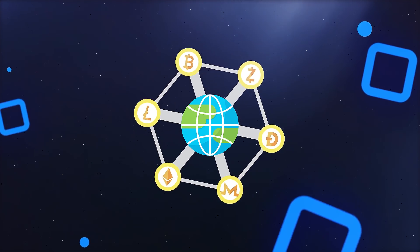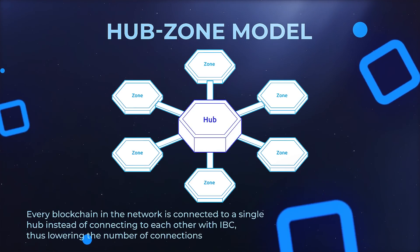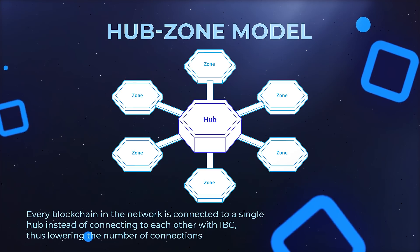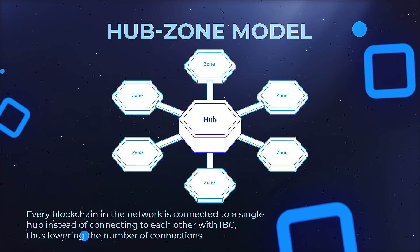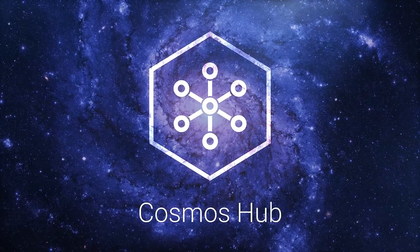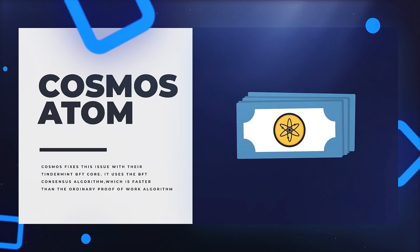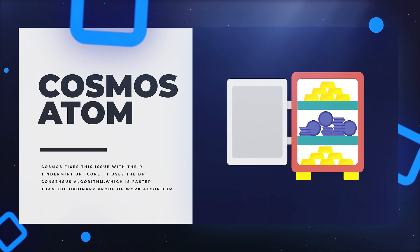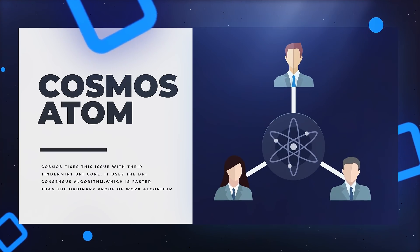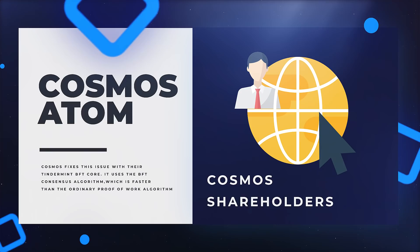Cosmos Network is based on a hub-zone model. Every blockchain in the network is connected to a single hub instead of connecting to each other with IBC, thus lowering the number of connections. A zone is a blockchain that is connected to the central hub, and communication between zones is facilitated by the hub. Cosmos Hub is the world's first blockchain network developed this way. The native token of Cosmos Hub is ATOM, which can be used to pay usage fees and, more crucially, for staking. Cosmos proposes an open governance framework in which ATOM holders stake their assets and collaborate to make network-wide decisions — ATOM holders effectively operate as Cosmos project shareholders.